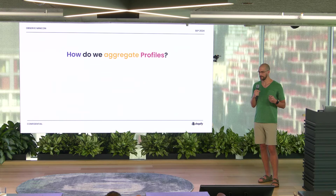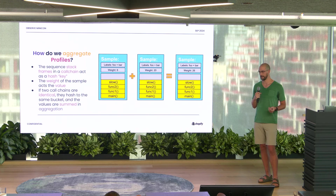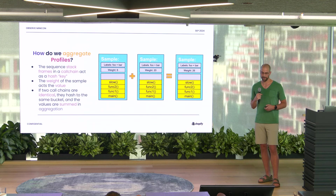So how does this aggregation process actually work? It's actually fairly conceptually simple. We can treat the stack trace and the label as a sort of composite key, and if two samples have the same stack trace and the same label set, we can simply add their weight — you can think of them as hashing to the same bucket. In the example on screen, we've got two samples with the same stack and the same labels; one has a weight of six, the other has a weight of 20, so we combine them to have a sample with a weight of 26. This is what's going on under the hood when you're using a system like Pyroscope to query across thousands of samples.